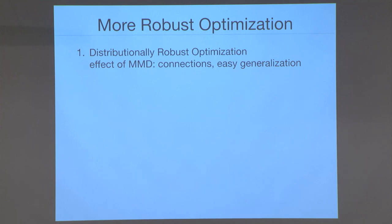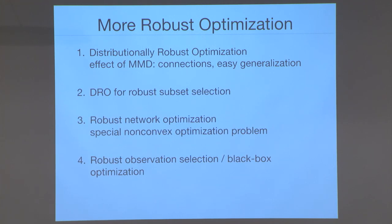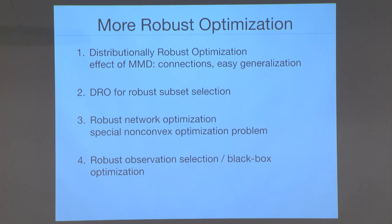In the interest of time, let me briefly mention other work connecting robust optimization and machine learning: distributionally robust subset selection under uncertainty, robust network optimization, and extending these ideas to black-box and Bayesian optimization, where the task is to sequentially select observations to find the optimum of an unknown function as quickly as possible — even when there are perturbations in your data. Thank you very much for your attention.